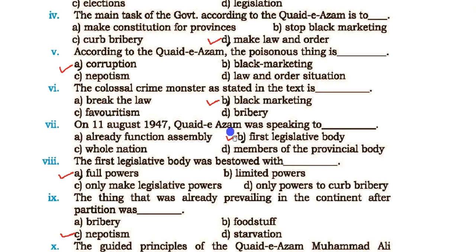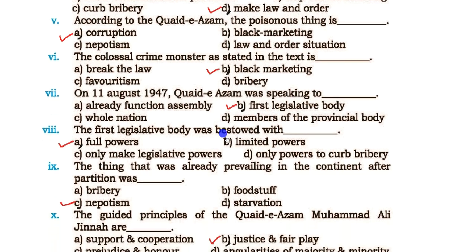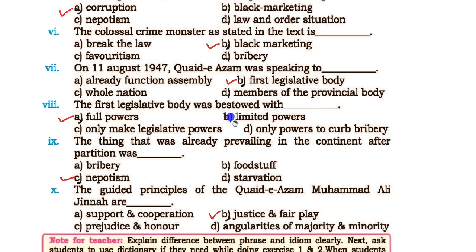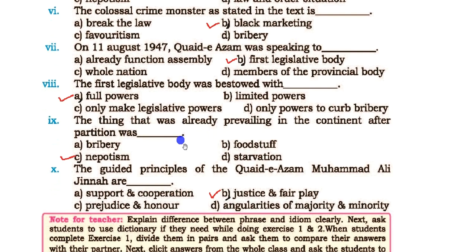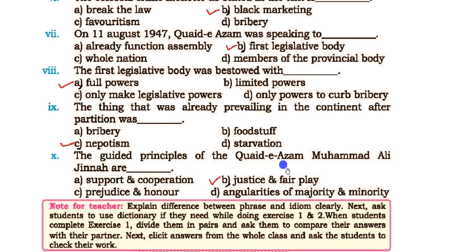Number 7: On 11th August 1947, Quaid-e-Azam was speaking to the first legislative body of Pakistan. Number 8: The thing that was already prevailing in the subcontinent after partition was communal tension and unrest.